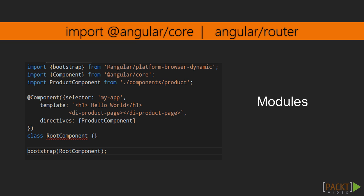In Angular applications, we use inbuilt modules like @angular/core, the router module, and the forms module. We are also creating modules which we import and export to use functionality. These are ES6 modules, and every separate service, pipe, directive, and component acts as an ES6 module defined using an ES6 class. Here we have the ES6 class root component representing our component, so it is also representing an Angular module.